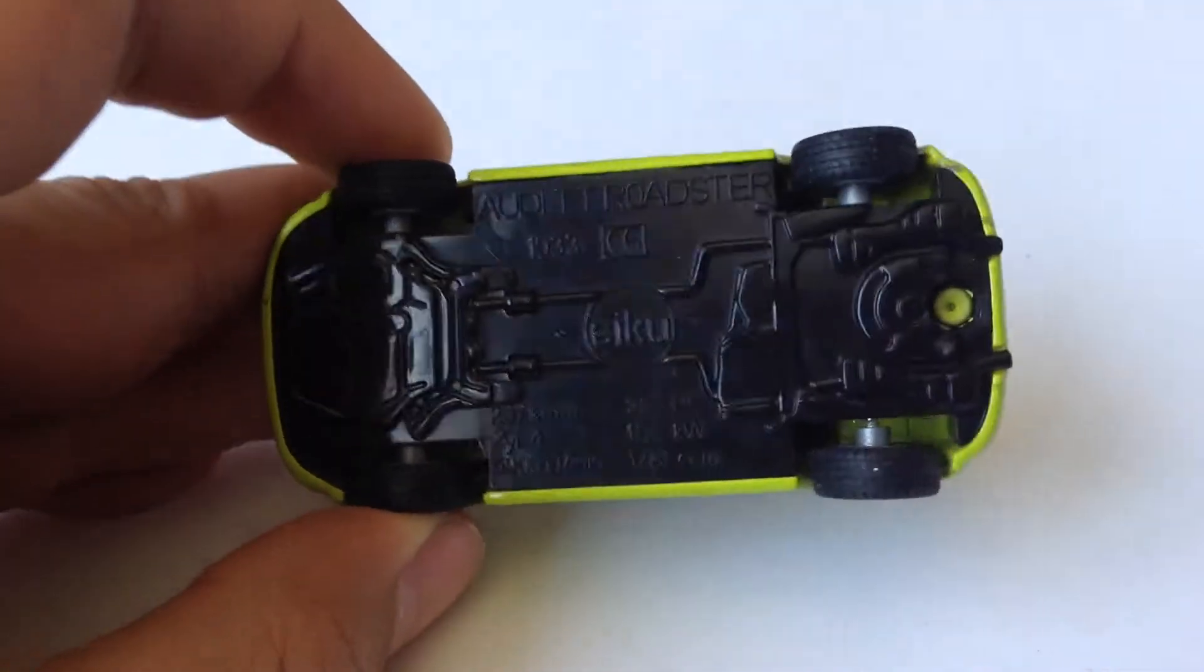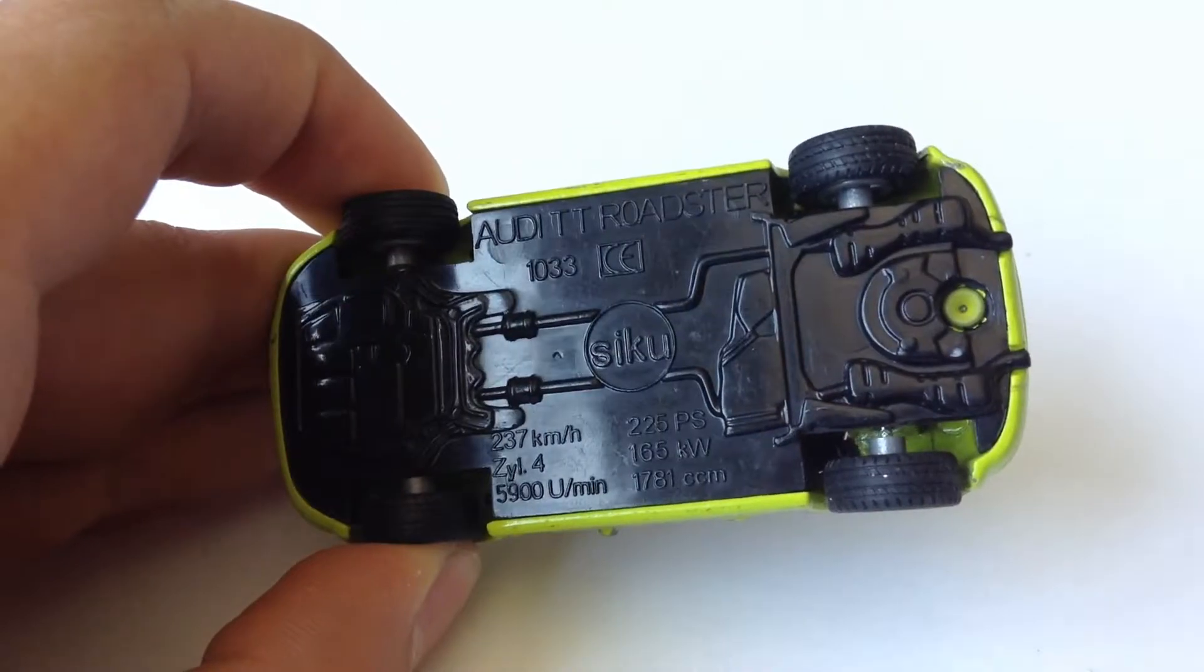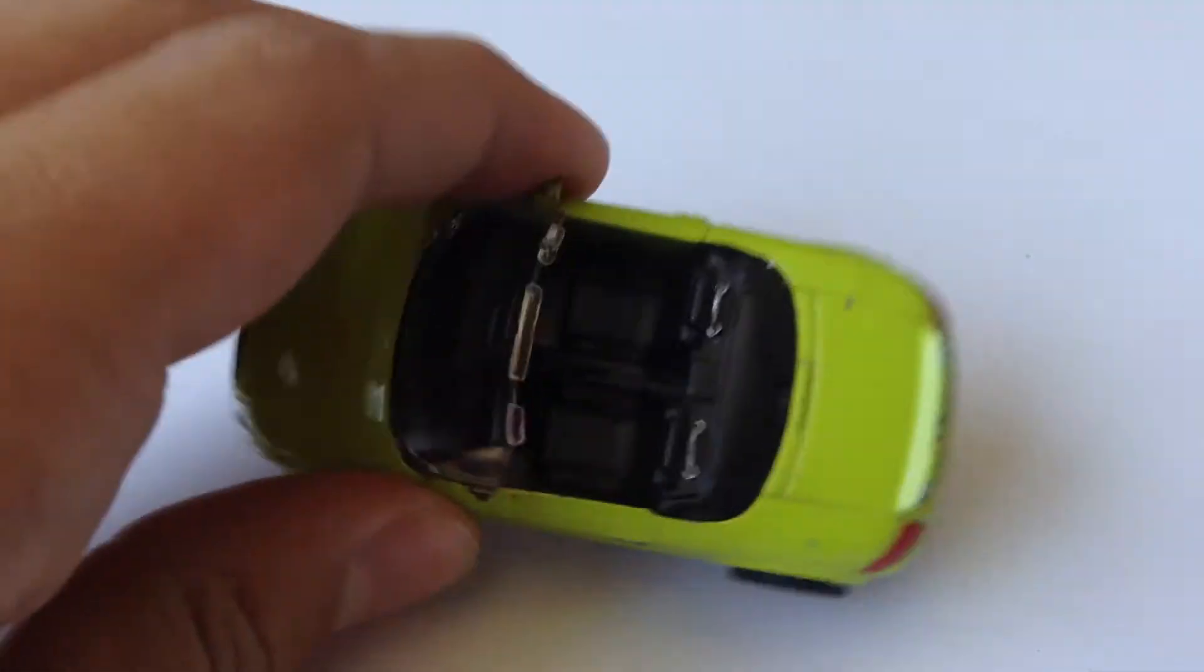So let's take a look at the bottom. Now at the bottom we see Audi TT Roadster. 237 kilometers an hour. Pretty cool. And it rolls really well. Like, really well. I almost got it on my fingers.